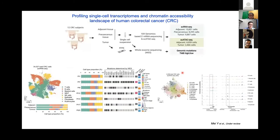For colorectal cancer, we performed both single-cell RNA-seq and single-cell ATAC-seq. We generated more than 30 samples in total from colorectal cancer cells sampled from adjacent normal, precancerous, and primary tumor tissues from 12 treatment-naive patients. We also performed whole-exome sequencing on each sample and sub-grouped patients into tumor mutation burden high and tumor mutation burden low groups. Tumor mutation burden high is positively related with better immunotherapy response.